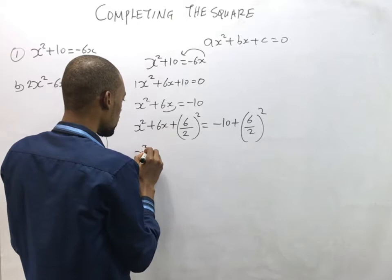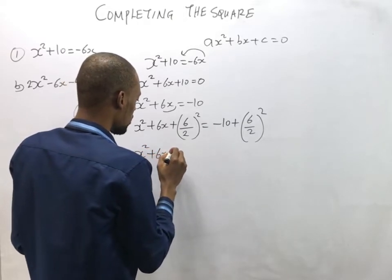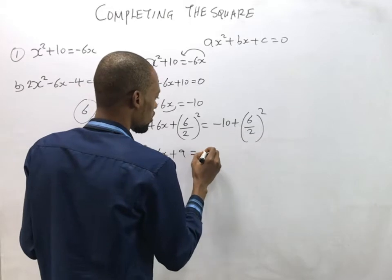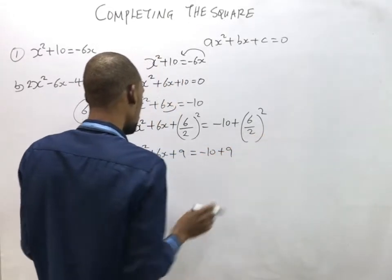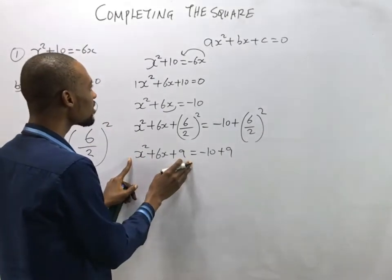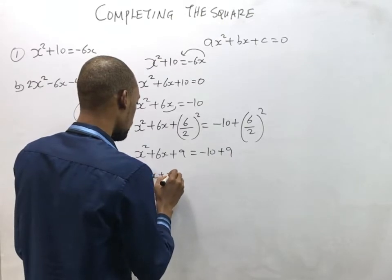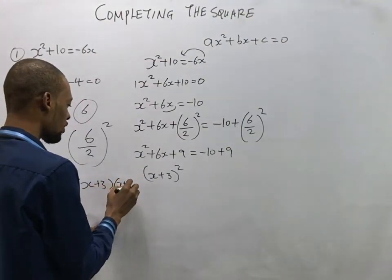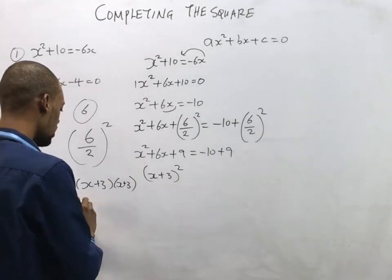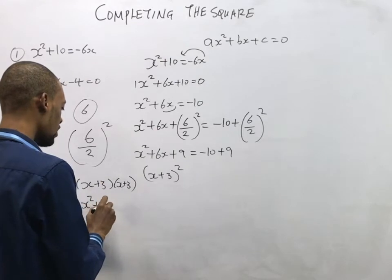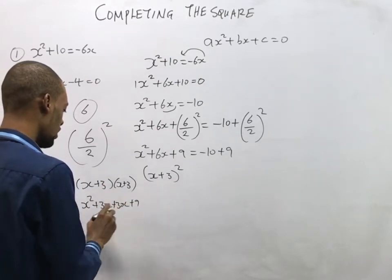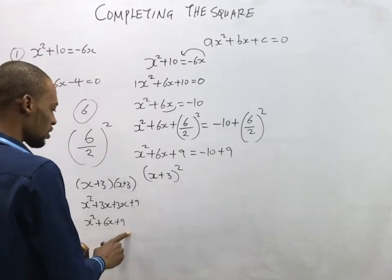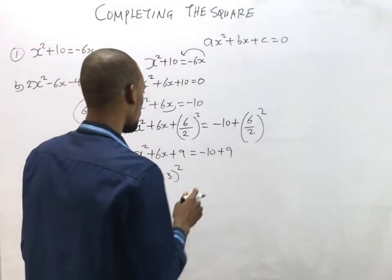Since 6 divided by 2 is 3, and 3 squared is 9, this becomes: s² + 6s + 9 = -10 + 9. To verify: (s + 3)(s + 3) = s² + 3s + 3s + 9 = s² + 6s + 9. So s² + 6s + 9 is confirmed correct, meaning the left side is a perfect square.